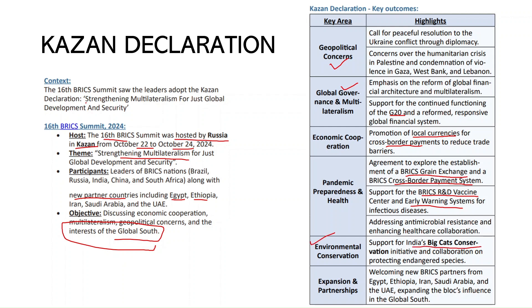India's Big Cat Conservation Initiative was something BRICS countries agreed to support, and there are plans to expand its reach to other countries. Expansion and partnership were also discussed in the Kazan Declaration. For the exam, remember the theme, where it was held, and which new countries joined the initiative.